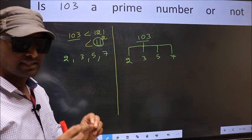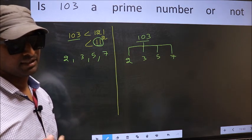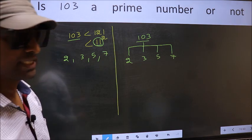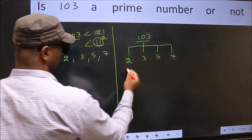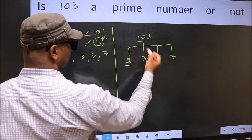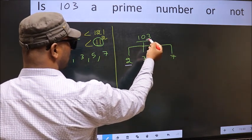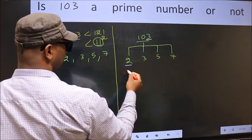Did you understand the method? Let us check with the divisibility. Starting with 2: last digit is 3, not an even number. So, this is not divisible by 2.